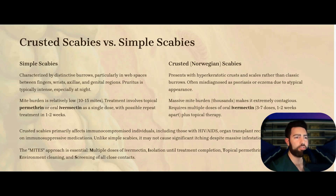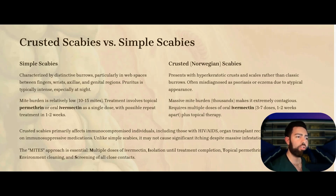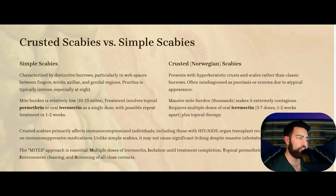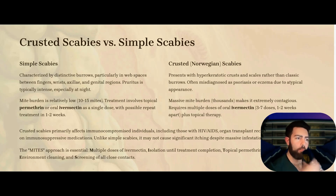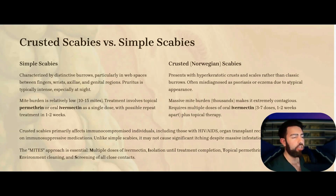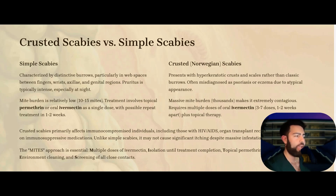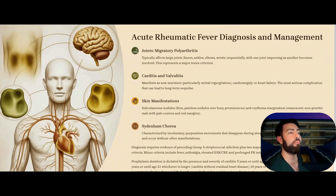Crusted scabies versus simple scabies. Crusted scabies looks almost like psoriasis or eczema — very disseminated with hyperkeratotic crust and scales. It looks terrible compared to simple scabies which only occurs in the typical body sites. Crusted scabies is seen in immunocompromised individuals: HIV/AIDS and organ transplant recipients on immunosuppressive medications. Unlike simple scabies, these patients require multiple doses of oral ivermectin, 3 to 7 doses, 1 to 2 weeks apart, in addition to topical permethrin. You need to isolate these patients, clean their environment, and screen all close contacts.